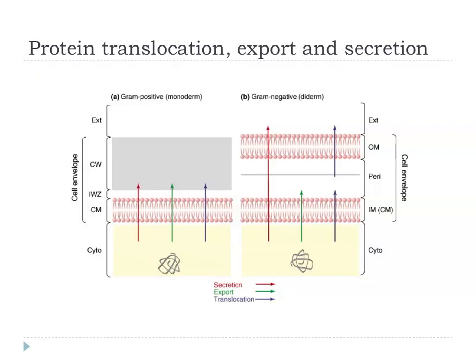In the gram-positive or monoderm, there is a single cytoplasmic membrane and no outer membrane. There is a cell wall which contains things like peptidoglycan. If proteins go across this cytoplasmic membrane, they can get out into the external milieu or into the cell wall. Effectively, in the gram-positive bacterium, secretion, export, and translocation are all the same thing — you're just jumping across this one membrane.